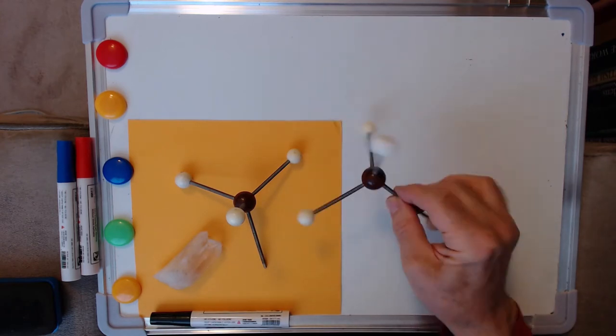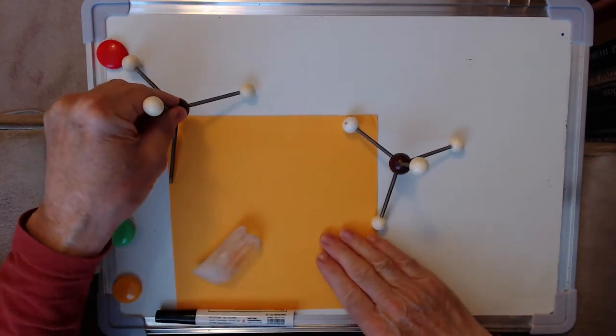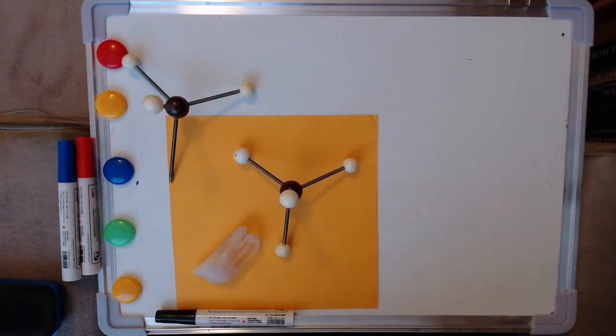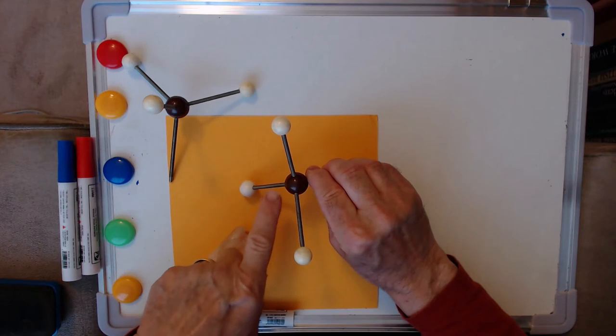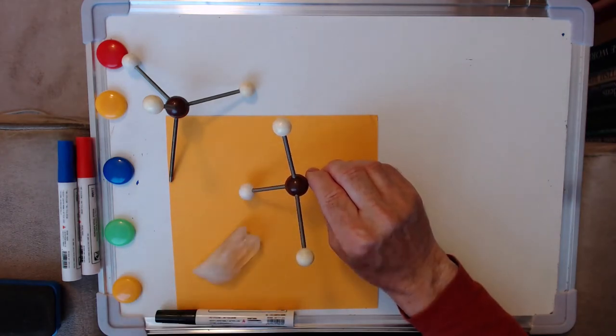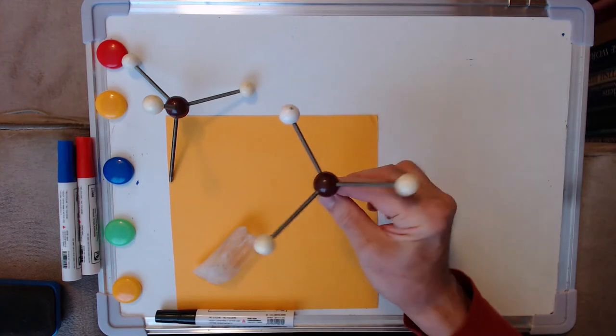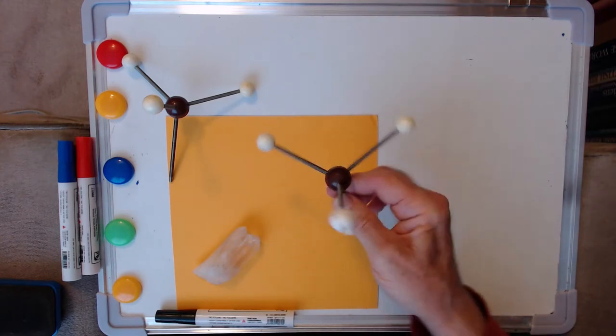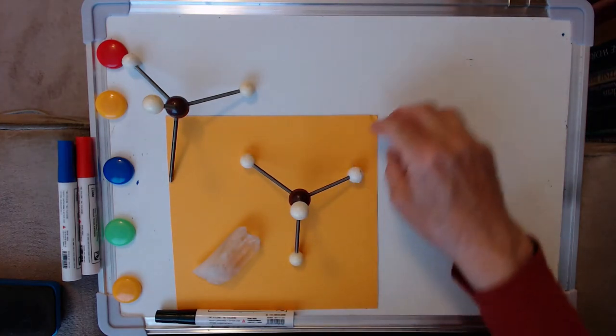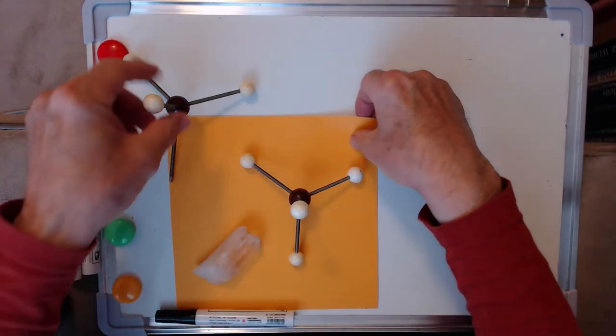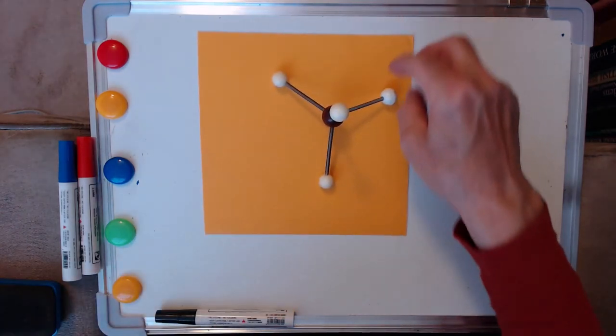So I'm going to start first with this tetrahedrally shaped unit here. Now what this represents in a very simplistic form is the basic building block of silica, and there's a silicon atom in the middle. In this particular model it's brown, and then there are four oxygen atoms attached to it all at equal angles. So this is our basic tetrahedron.